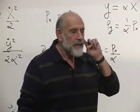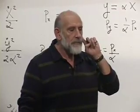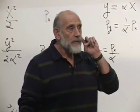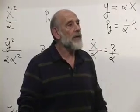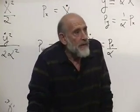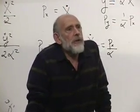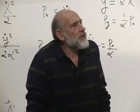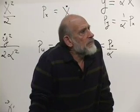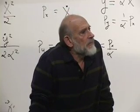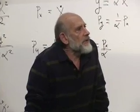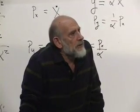A Hamiltonian that does not conserve energy, like a ball falling — why does it not conserve energy? Because the ball loses potential energy and gains kinetic energy. The total energy is conserved.